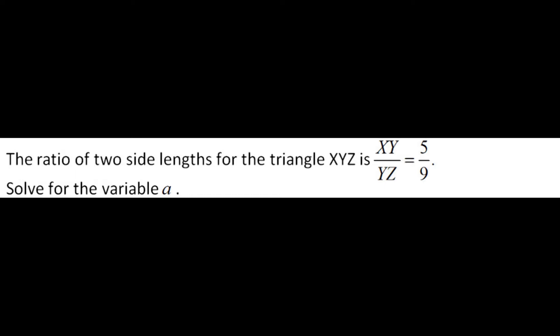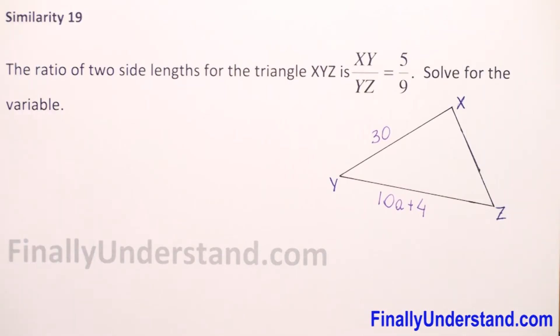The ratio of two side lengths for the triangle XYZ is XY to YZ is 5 to 9. Solve for the variable.